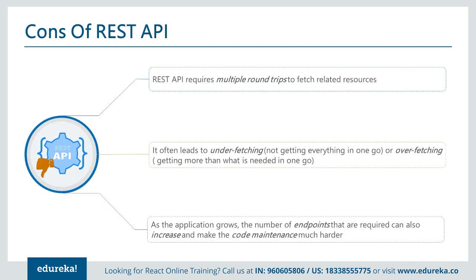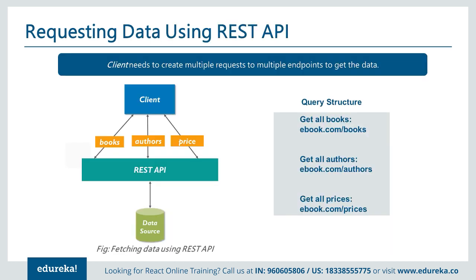What are the cons of REST API? REST API requires multiple round trips to fetch related resources. With multiple routes, it often leads to under-fetching or over-fetching, because when you hit a REST API you either get all the data or only data for a particular field. As applications grow, the number of endpoints required can increase and make the code much harder to maintain. Clients need to hit multiple endpoints like /book, /author, /price.